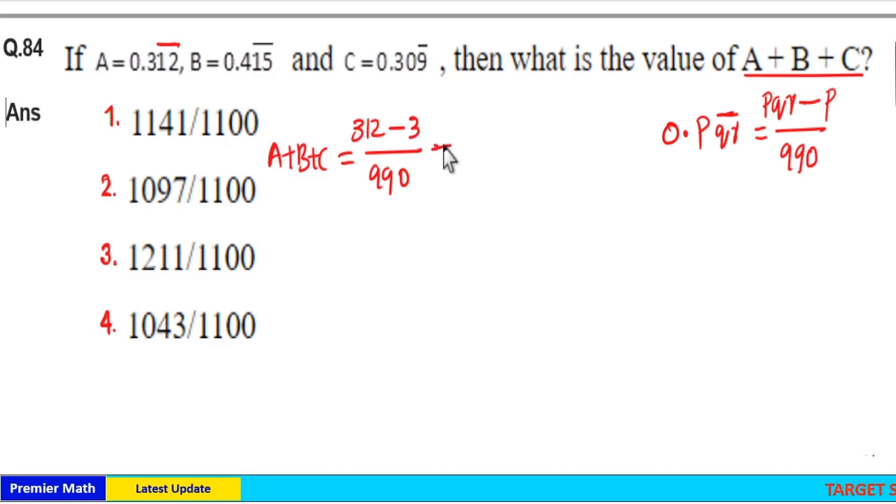Same way B is equal to 990 in the denominator. And here 415 minus 4. 4 is not repeating. So subtract 4 from 415.